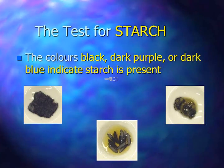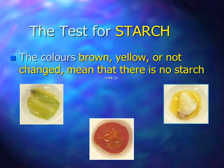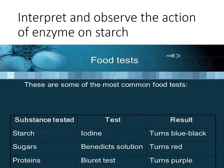If we perform the iodine test, a black, dark purple, or dark blue color indicates that starch is present. If after performing the iodine test the color remains brown, yellow, or unchanged, it means there is no starch. So a blue color indicates that starch is present in that food. Now we are going to interpret and observe the action of the enzyme on starch.